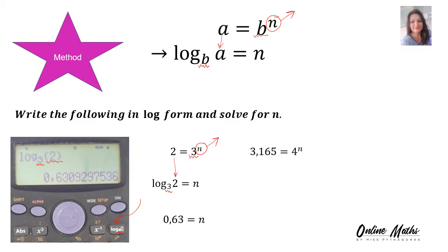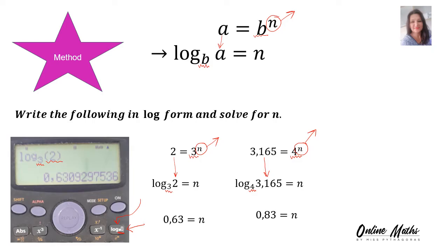Let's do another example. 3.165 is equal to 4 to the power of n. You write log again. The base of the exponent stays the base of the logarithm. The 3.165 will stand with the log, equals, and the exponent becomes the subject of the formula. Substitute those values into your calculator and your answer is 0.83.